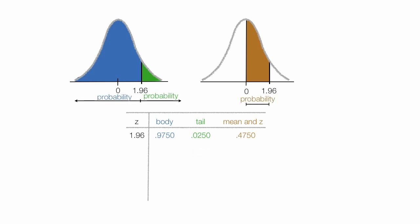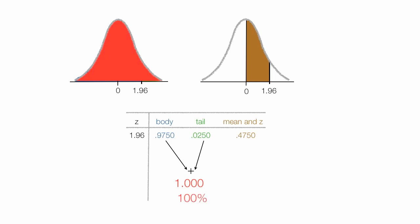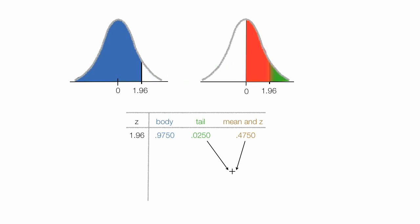These three areas represent different probabilities. When the body and tail are added together — the blue and green areas — the value is 1, which is the red area. This is 100% of everything under the bell curve. When the tail and mean-to-z area are added together, that red area equals 0.50, or 50% of the area under the bell curve — half the area.